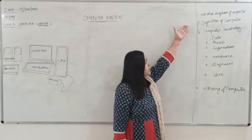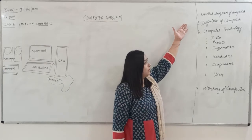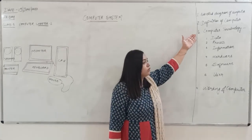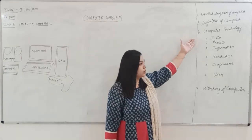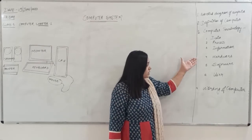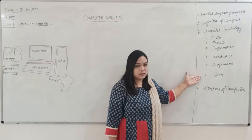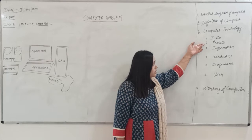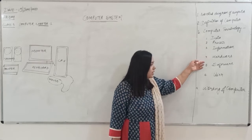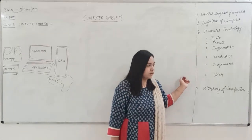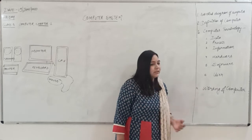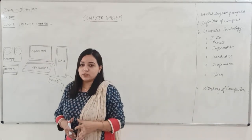We are going to discuss about the labelled diagram of a computer, the definition of a computer, computer terminology in which we will discuss these six points: data, process, information, hardware, software, and user. And lastly we will be discussing about the working of a computer.